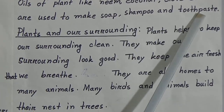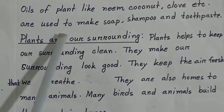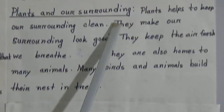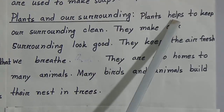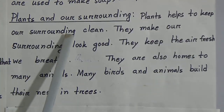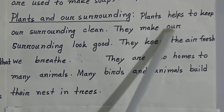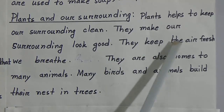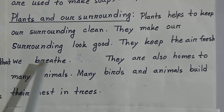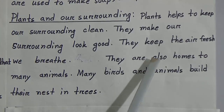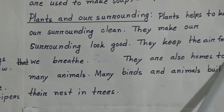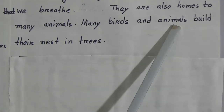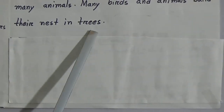Our last point is plants and our surroundings. Plants help to keep our surroundings clean. They make our surroundings look good. They keep the air fresh that we breathe. They are also homes to many animals — many birds and animals build their nests in trees.